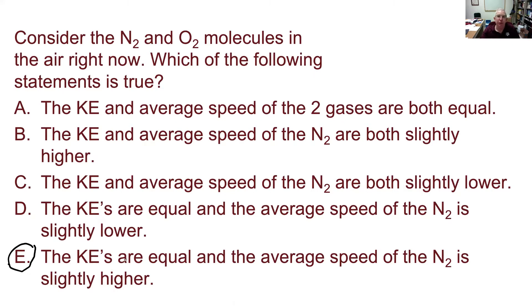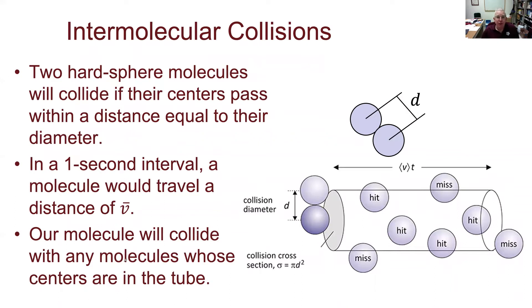Now, on to molecular collisions. I want to start thinking about collisions between molecules. As we did when deriving the gas law, we're going to treat our molecules like hard spheres. This is not a perfect description, but it's the simplest available and it works decently. A collision will take place any time the centers of two molecules get within a distance d, where d is the diameter of one molecule — that would be a grazing collision. If they were coming head on, we'd have a more forceful collision.